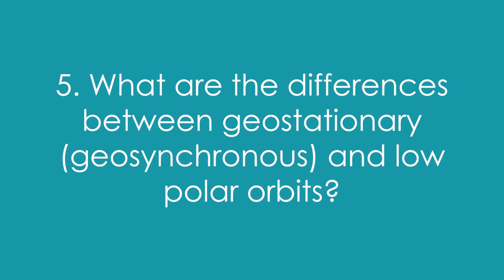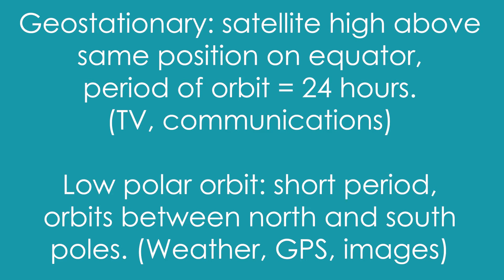Question 5: What are the differences between geostationary or geosynchronous and low polar orbits? Geostationary, satellite is high above the same position on the equator, that's the only place where you can have something that stays above the earth at the same place. The period is 24 hours and we use them for TV and communications. Low polar orbit, we have a short period because they are lower and the orbit between the north and the south poles. We use these for weather, GPS and taking images.